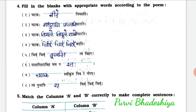5th: Chivu chivu blank tvam vihagah — answer is pujasi. 6th: Matapitra viharati — answer is chanakam. 8th: Tvam punarapi blank — answer is rata.